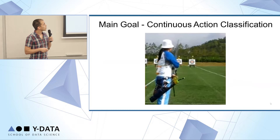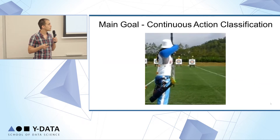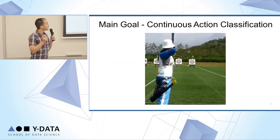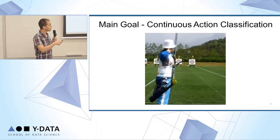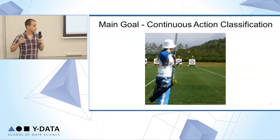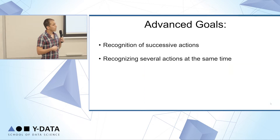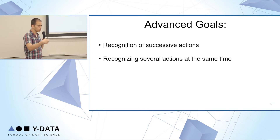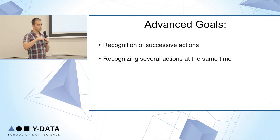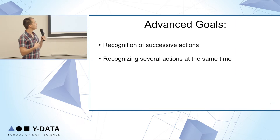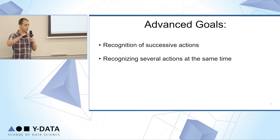Our main goal is to classify videos of arbitrary length. For example, given a video of someone shooting an arrow, we would like to return 'archery' or 'someone shooting an arrow.' The stretch goal would be to detect actions that change over time — subsequent actions — such as someone cutting an arrow and then eating. The stretch goal of the stretch goal would be to recognize several actions occurring in the frame at the same time.